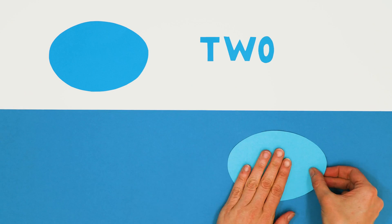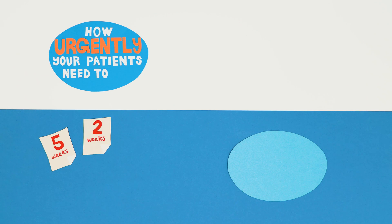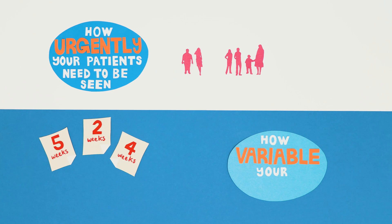When trying to decide which percentile to set for the capacity of your own service, you'll need to look at two main factors: how urgently your patients need to be seen, and how variable your demand is.